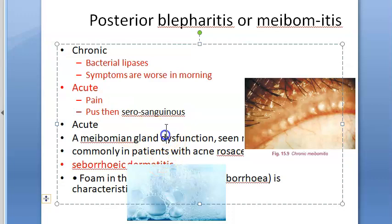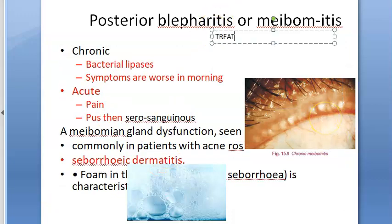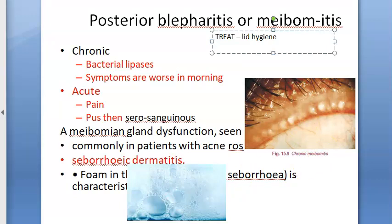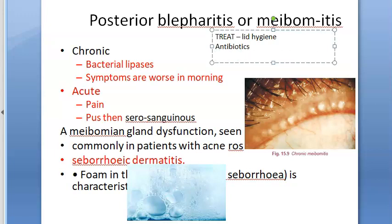For treatment of meibomitis: lid hygiene is important — warm compress and expression of accumulated secretions at least once a day, with repeated vertical massage (milking) of the glands. Topical antibiotics in the form of eye ointment should be rubbed at the lid margin; antibiotic eye drops may be used three to four times a day. Systemic tetracyclines such as doxycycline 100 mg are considered the mainstay of posterior blepharitis treatment.